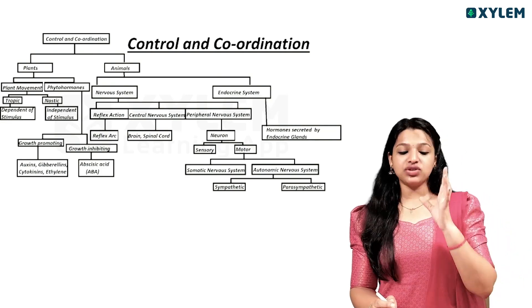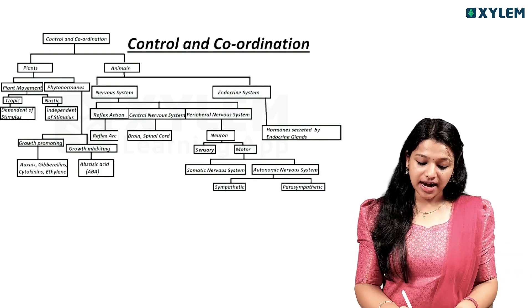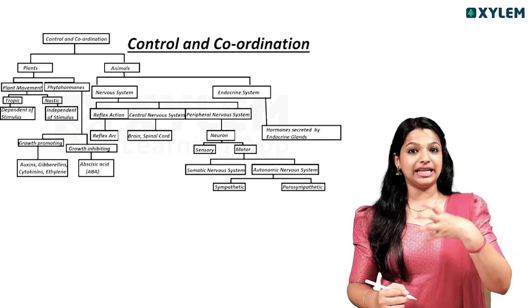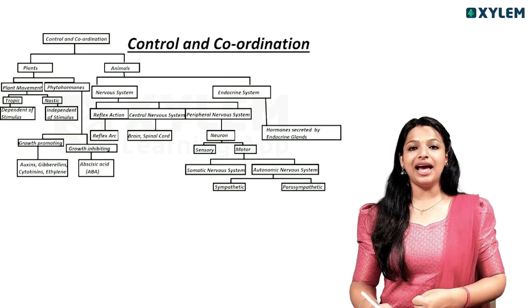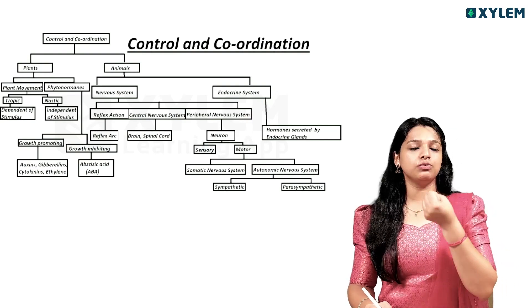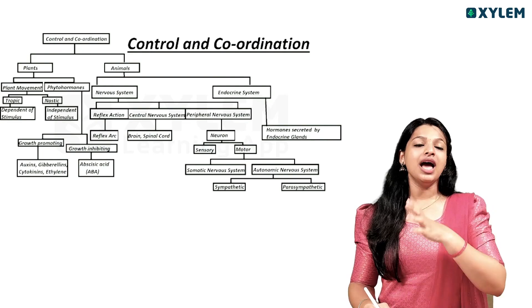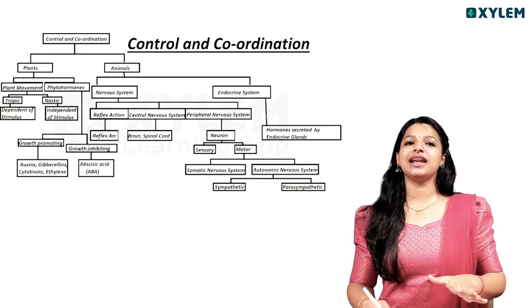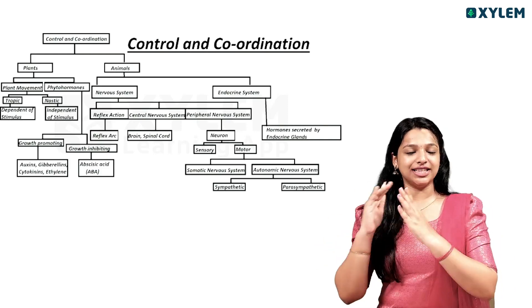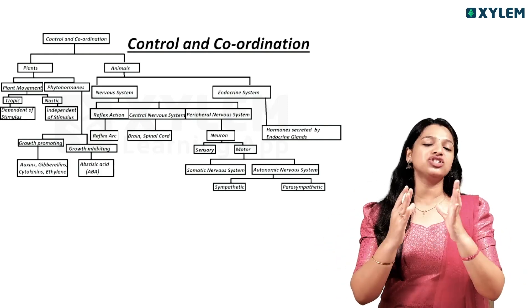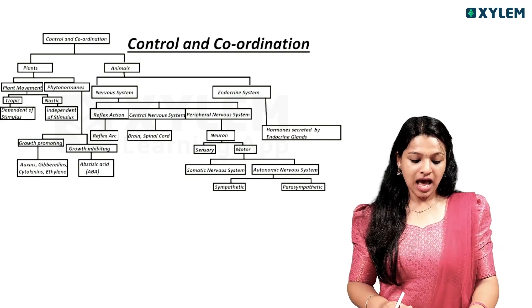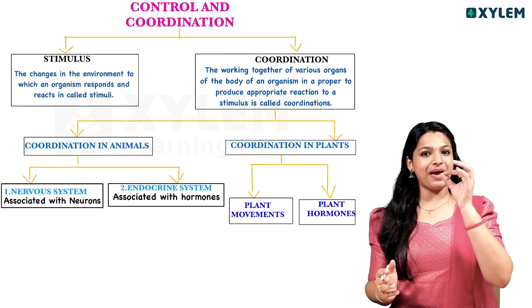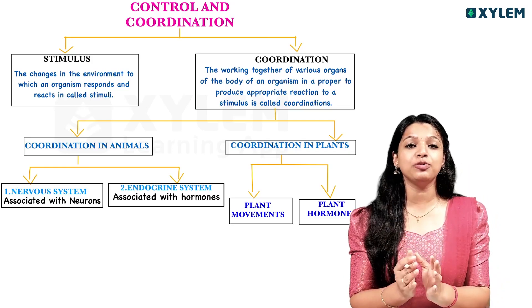We learn the brain and spinal cord — that's why we learn the nerves as the peripheral nervous system. We learn the neurons: sensory neuron, motor neuron, relay neuron. We learn the nerves and the hormones as well. That's why we learn the brain in our central nervous system. In our control and coordination, there is a term called Stimuli and Response.